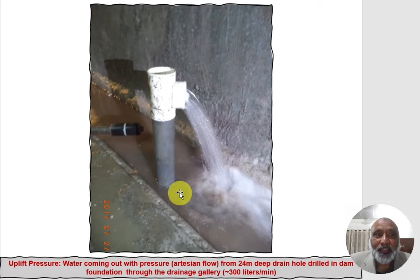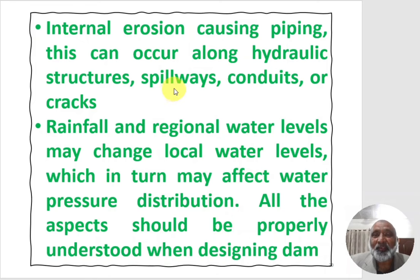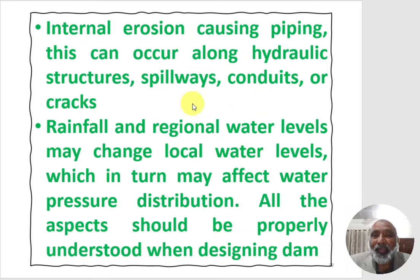Another cause of piping is internal erosion, which can occur along hydraulic structures, spillways, conduits, or cracks. If pipes or conduits are placed in the dam structure to cross cables or other utilities, the contact between those pipes and concrete can create a seepage path if quality workmanship is not observed. If there are cracks in the concrete, water can start seeping and piping can develop through those cracks. Rainfall and regional water level changes may also affect water pressure distribution.